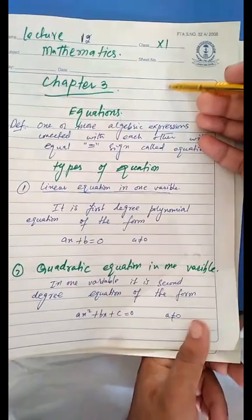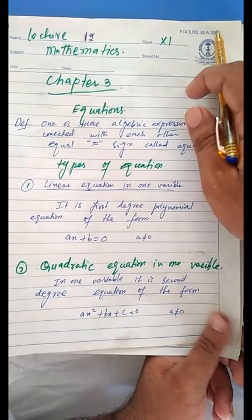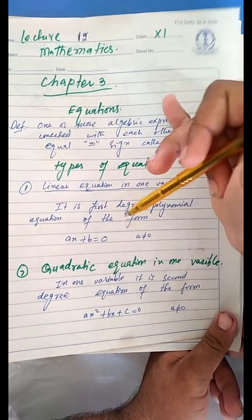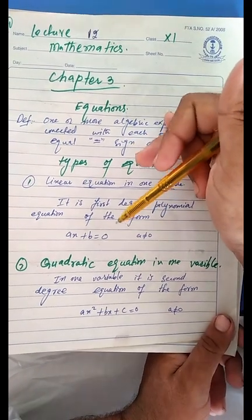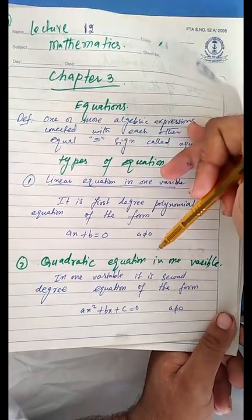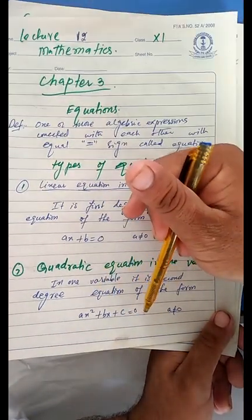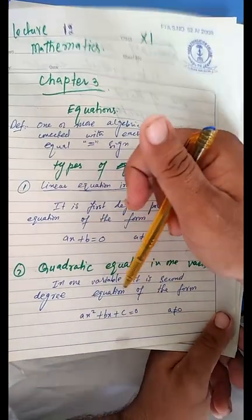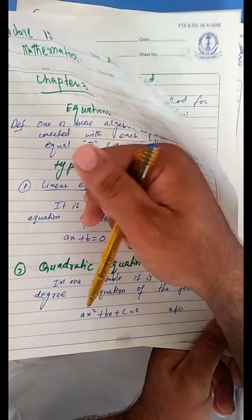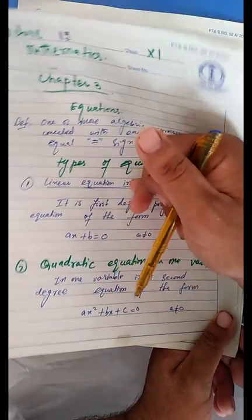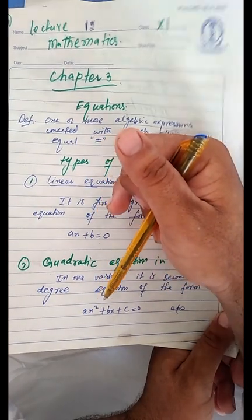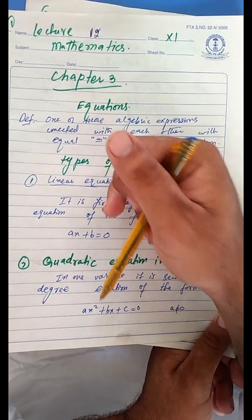Another form is the quadratic equation in one variable. For a linear equation, the highest power is 1; for a quadratic equation, the highest power is 2. It is a second-degree equation of the form ax² + bx + c = 0. Here, x is the variable, a, b, c are the coefficients, and the highest power is 2.